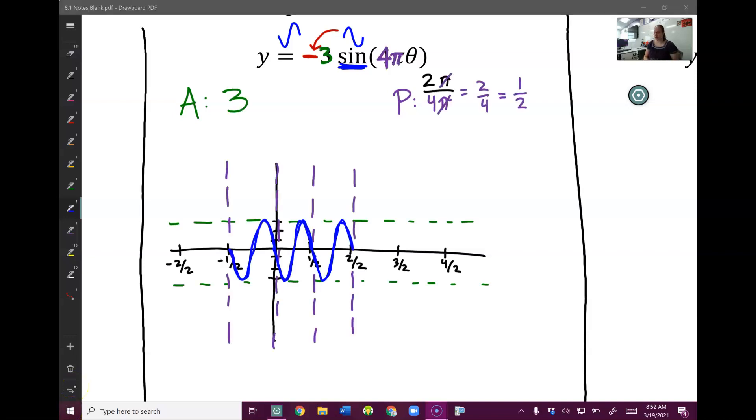Let's see how you did. Our amplitude is always the number in front. Don't put the negative on it. We drop the negative until the end. Our period is 2π divided by the number inside. The number inside is 4π. So 2π over 4π. The π's cancel. And that gives me 2 fourths or 1 half simplified.